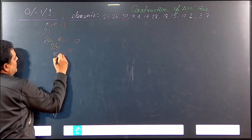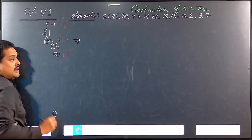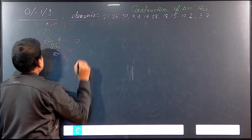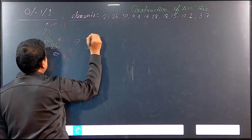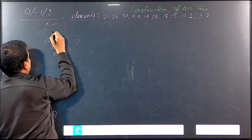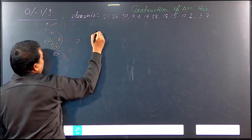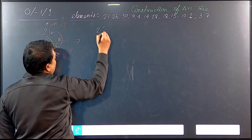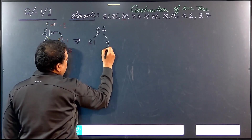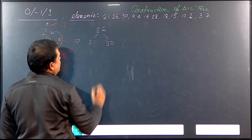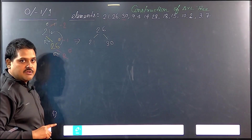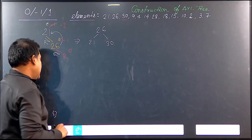How will we resolve the problem? We will solve it by some kind of rotation. This is an RR problem. We move towards the element where the new node was inserted — this is R, R. So rotation will bring 26 up, with 21 on the left and 30 on the right. Always remember, after rotation the tree will again be a binary search tree.